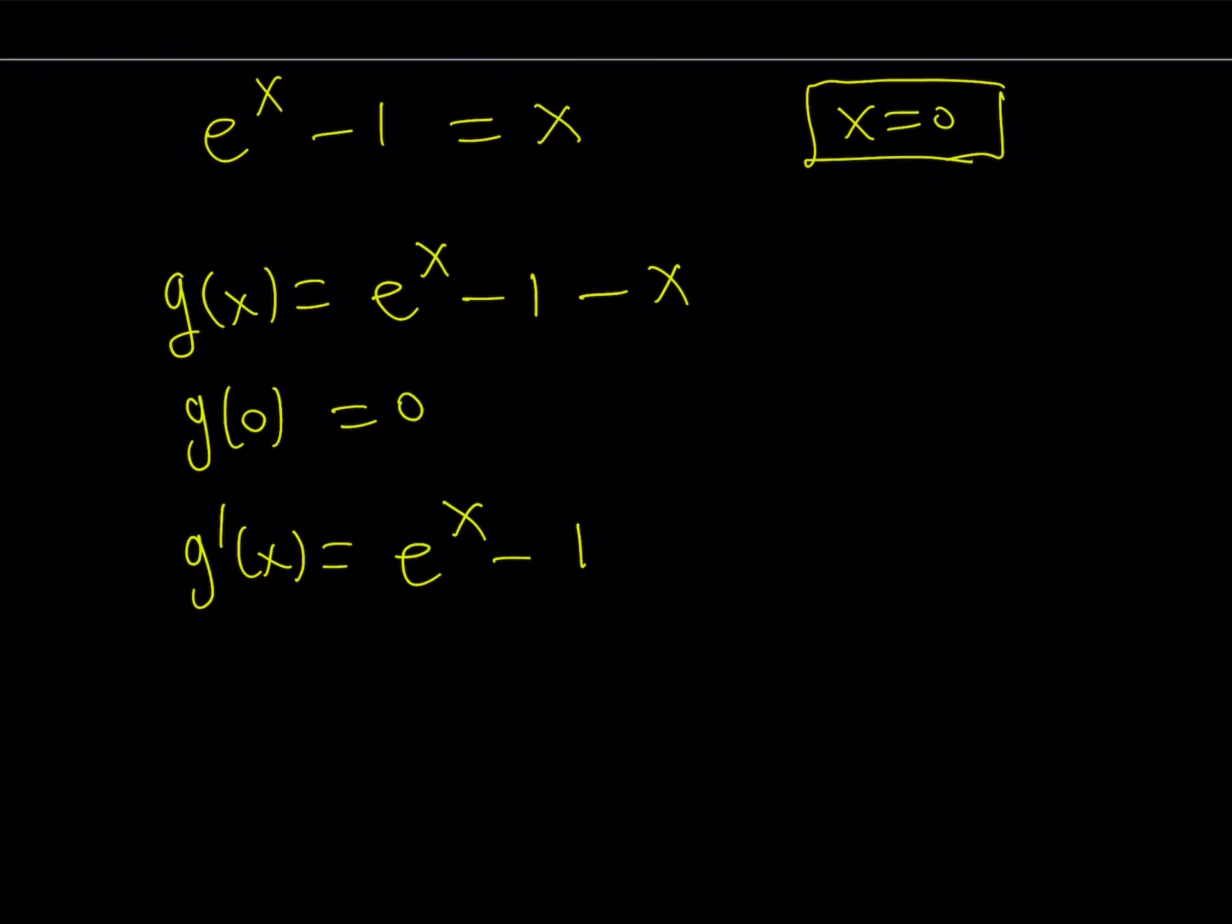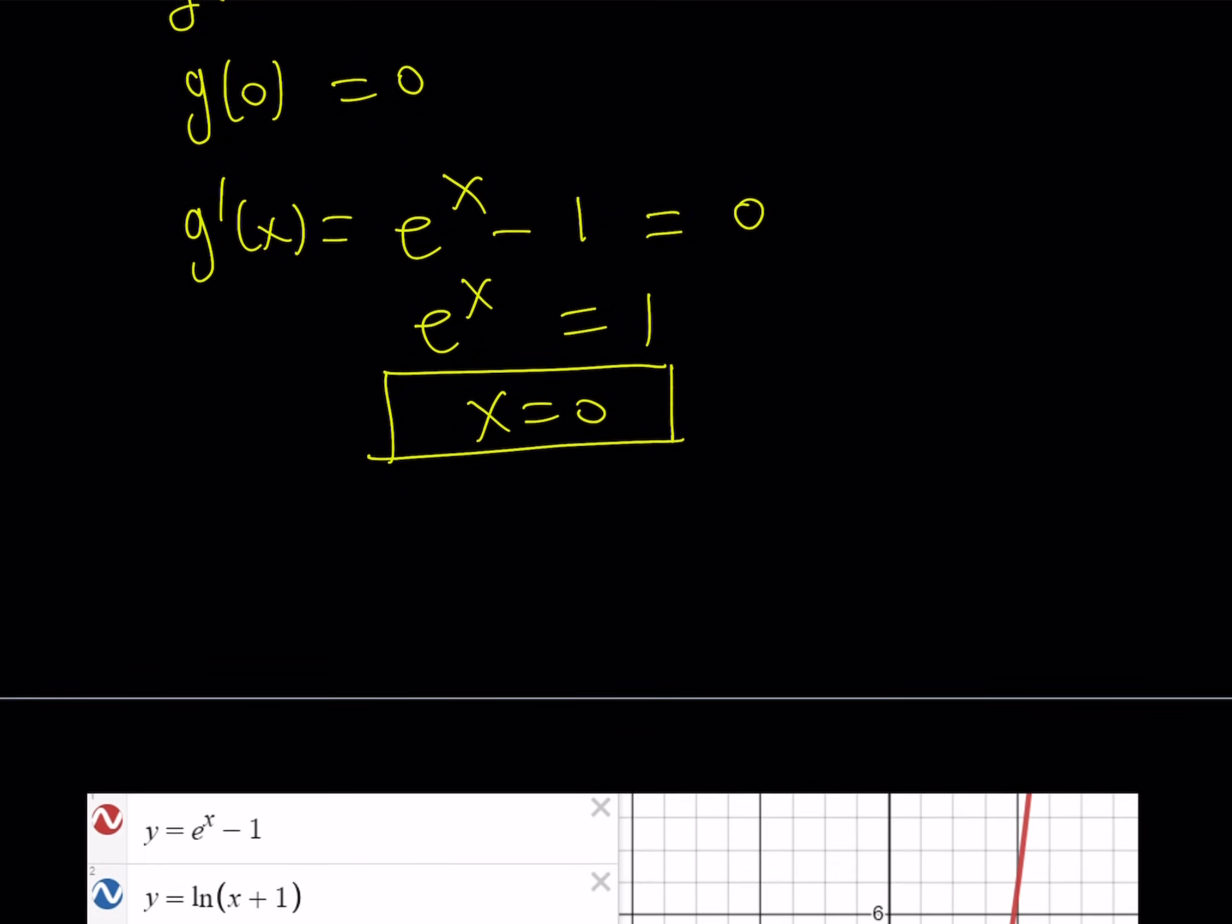And now, if you look at e to the power x minus 1 and set it equal to 0, from here, you get e to the power x equals 1 and x equals 0. So we do have a critical point at x equals 0.